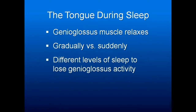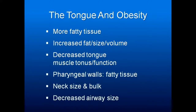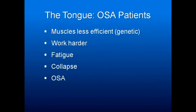Tongue is the major culprit. The genioglossus muscle relaxes during sleep — for some people it happens gradually, for some people it happens suddenly. There are different levels of sleep at which different individuals lose tongue activity. With obesity, the tongue itself will have more fatty tissue at the base, be larger in size, the muscles will not work as well, and the pharyngeal walls are fattier and collapse more easily. In obstructive sleep apnea patients, genetically the muscles are less efficient — they actually have a different genotype — so the tongue will fatigue and collapse more easily, resulting in snoring and obstructive sleep apnea.